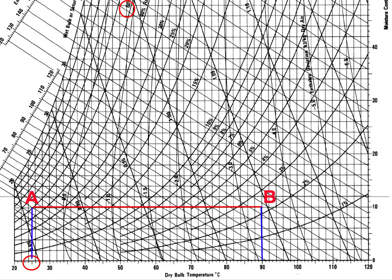Point B is located at a dry bulb temperature of 90°C, where the air is leaving the heater. Then the air goes through a bed of moist pet food, so the process is described as adiabatic saturation — enthalpy remains constant and the process moves towards saturation. Since wet bulb temperature lines and constant enthalpy lines coincide, we follow the wet bulb lines to identify point C, where air leaves the dryer at 70°C dry bulb temperature.